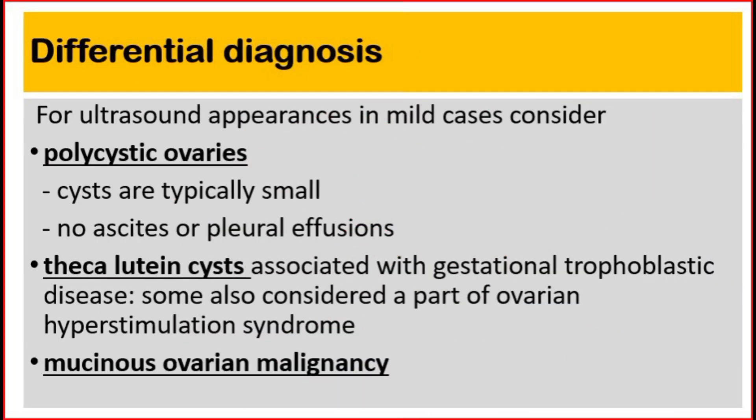Differential diagnosis. For ultrasound appearances in mild cases, consider: first, polycystic ovaries, in which cysts are typically small with no ascites or pleural effusions. Second, theca lutein cysts associated with gestational trophoblastic disease, sometimes also considered a part of ovarian hyperstimulation syndrome. Third, mucinous ovarian malignancy.